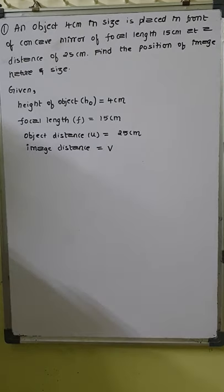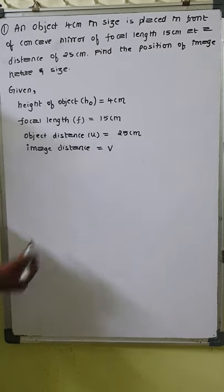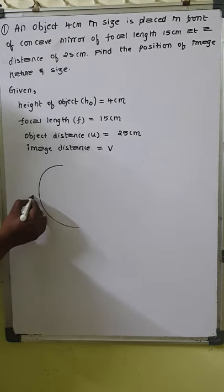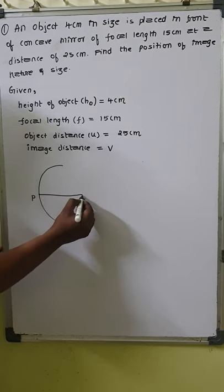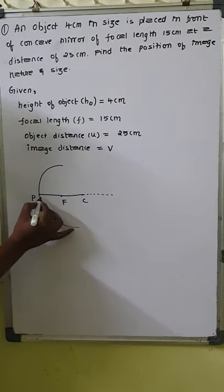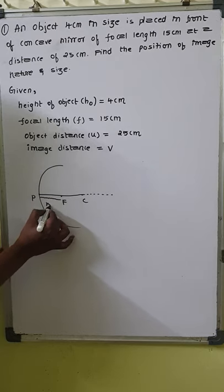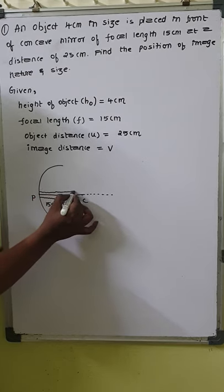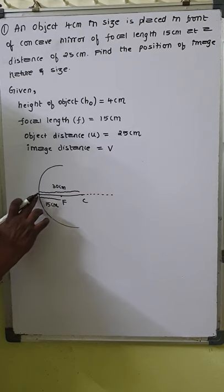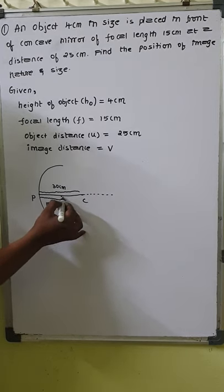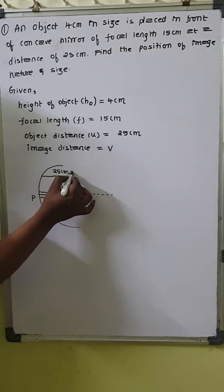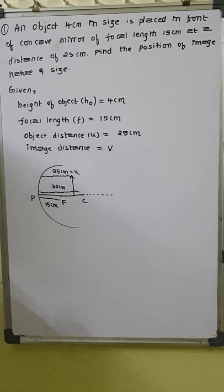As stated in the earlier video, we use sign convention for height of the object, focal length, and object distance. As the question says it is a concave mirror, let us draw it with pole, center, radius, principal axis, and focus. The focal length is 15 centimeter, so this distance is 15 centimeter. Since radius is twice the focal length, the radius will be 30 centimeter. The object is placed 25 centimeter from the mirror, so it falls between f and c.